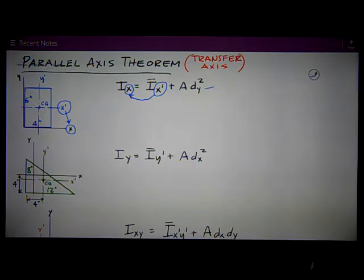I-bar x-prime is the centroidal moment of inertia. A is the area. dy is the distance from the x-axis, the new axis, to the centroidal axis, x-prime.